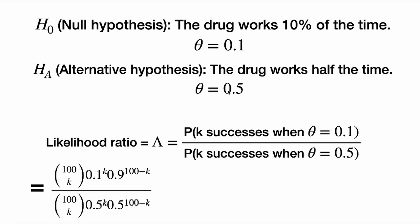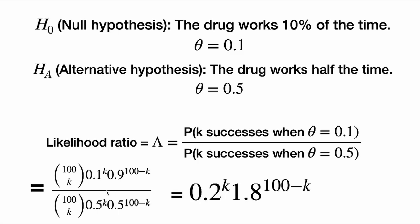Our likelihood ratio lambda is the ratio of two likelihoods: the probability of getting k successes under the null hypothesis that the drug works 10% of the time, over the probability of getting that number of successes when theta equals 0.5. The number of successes in 100 trials follows a binomial distribution, so we use the PMF for a binomial distribution when theta equals 0.1 and when theta equals 0.5. We can cancel the combinations, combine the exponents, and simplify to get 0.2 to the k over 1.8 to the 100 minus k.